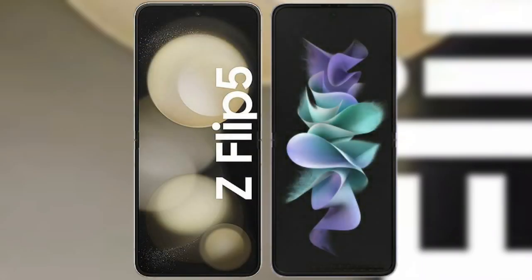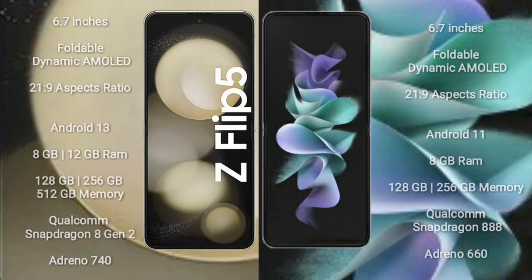I will compare the new Samsung Galaxy Z Flip 5 with Samsung Galaxy Z Flip 3. The Samsung Galaxy Z Flip 5 comes with a 6.7-inch foldable dynamic AMOLED display and aspect ratio 21x9. The Samsung Galaxy Z Flip 3 also comes with a 6.7-inch foldable dynamic AMOLED display and aspect ratio 21x9.